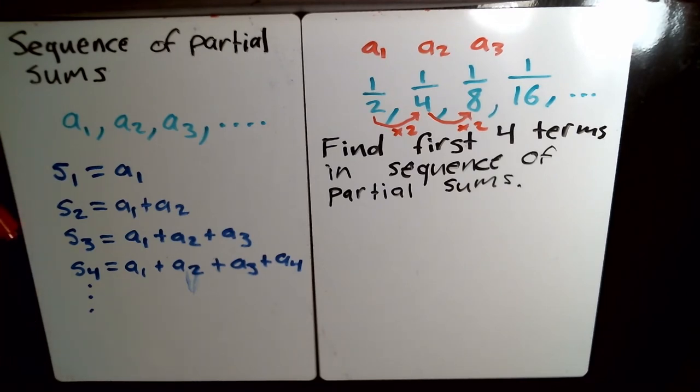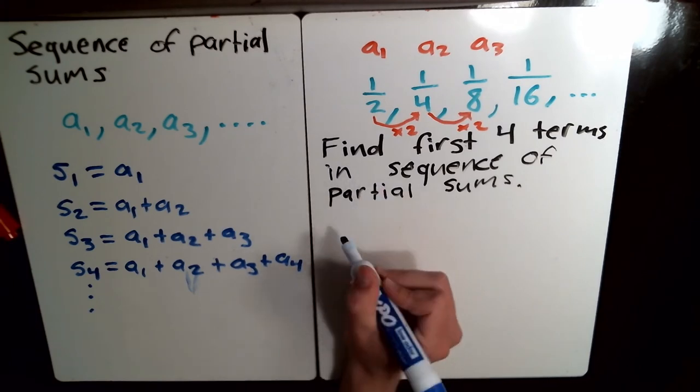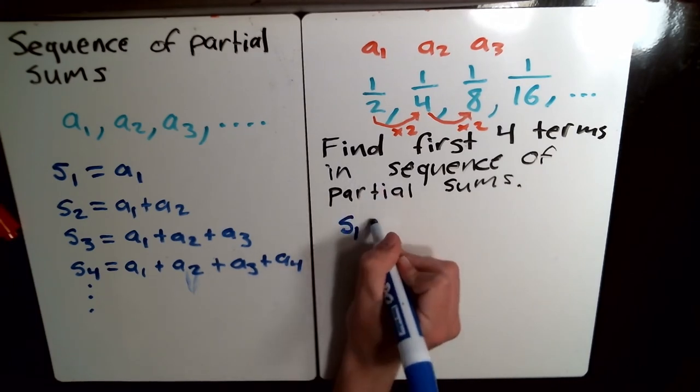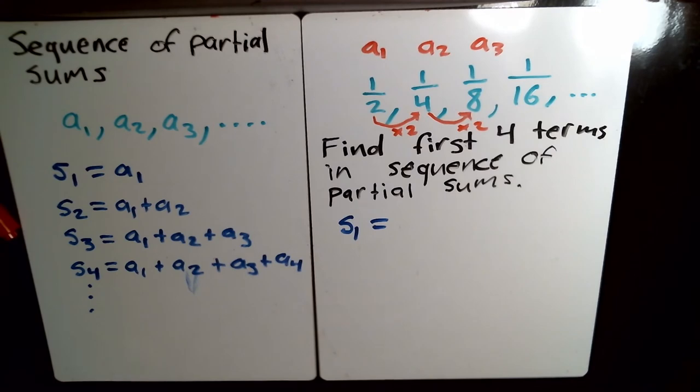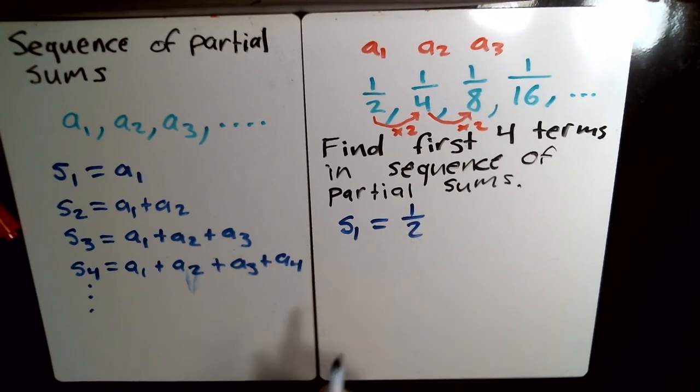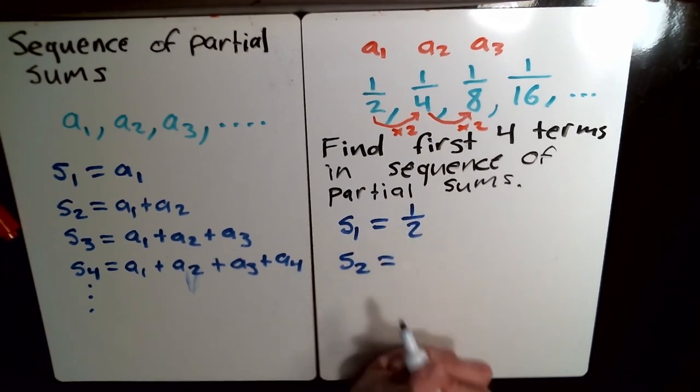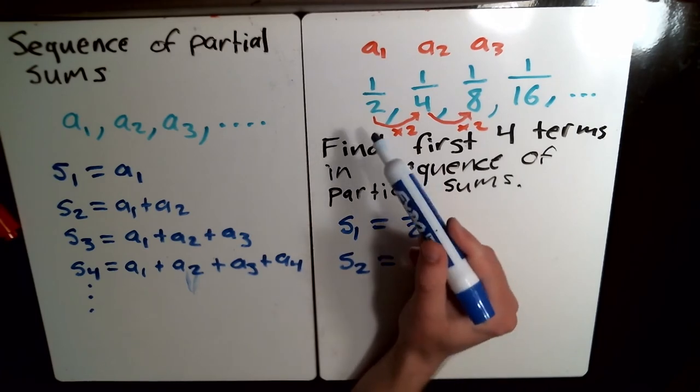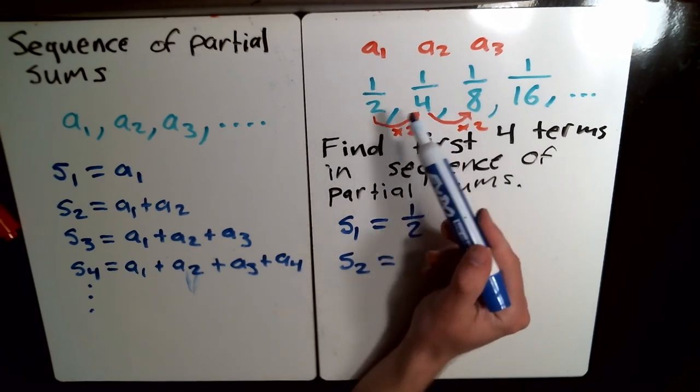So, let's go ahead and figure out the sequence of partial sums. Well, so, S1, that would be just the first term of this sequence. So, one half.